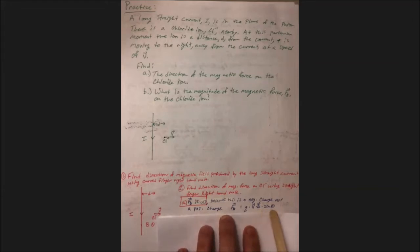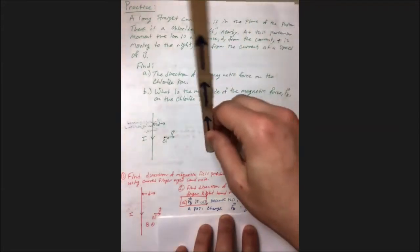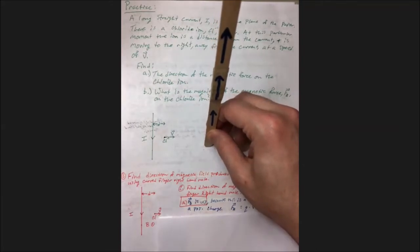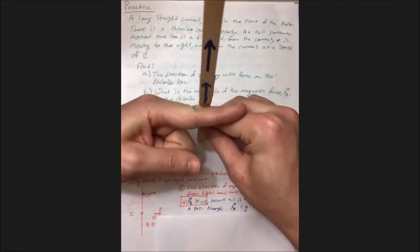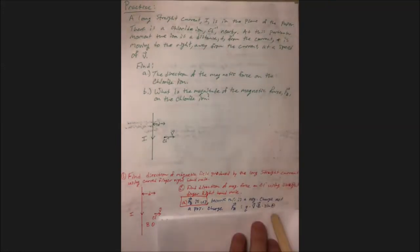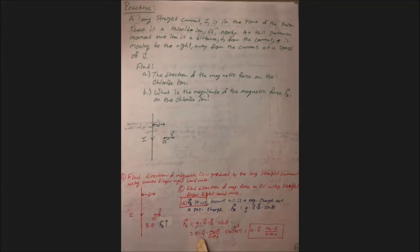For theta, the angle between the velocity vector and the magnetic field vector: the magnetic field is pointing up out of the plane of the page, and the velocity vector is pointing to the right. The angle between up and right is 90 degrees, so sine of 90 is one — we can ignore that factor. We plug in all of that information to get the magnitude of the magnetic force acting on the chloride ion.